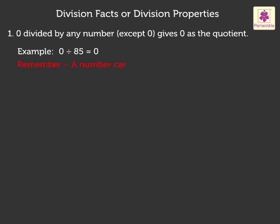Now, let us look at the division facts, or we can say division properties too. 1. 0 divided by any number except 0 gives 0 as the quotient. For example, 0 divided by 85 is equal to 0. Remember, a number cannot be divided by 0.